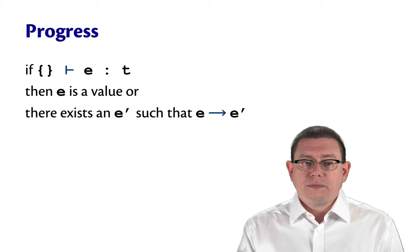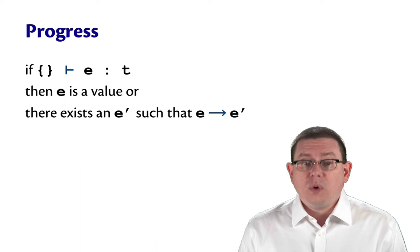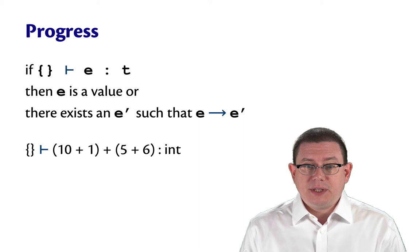Progress says that if an expression has a type T, then one of two things is the case. Either e is already a value, or there exists another expression e prime such that e takes a single step to e prime. So for example, 10 plus 1 plus 5 plus 6, that has a type int. And there does exist an e prime that it takes a step to, which we saw in the previous slide.